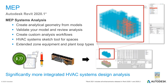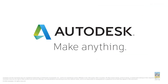Lastly, this is more of a Revit 2020.1 enhancement: analytical geometry can be created from the model for systems analysis. You can validate your model, review analyses, create custom analysis workflows, use HPC systems sketch tool for spaces, and extended zone equipment and plant loop types are also available.